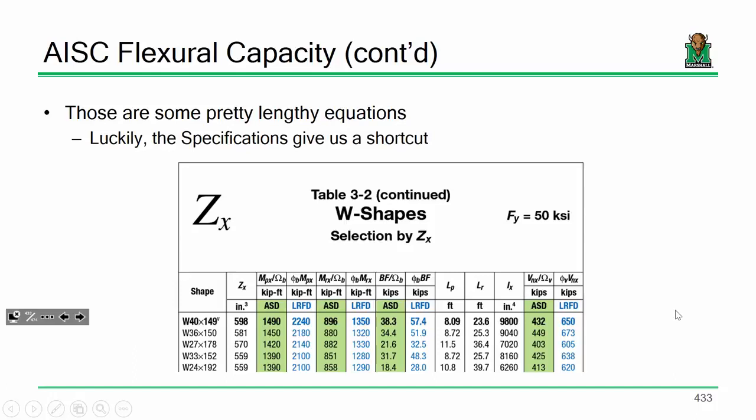Luckily, it doesn't really matter. L sub P and L sub R really don't need to be computed because you've got the specs, particularly the ZX table. L sub P and L sub R is computed for all of the shapes that you would be designing with. So once you find your shape, you can see L sub P and L sub R are already computed and we can just use those.